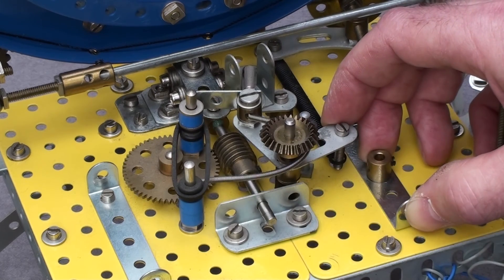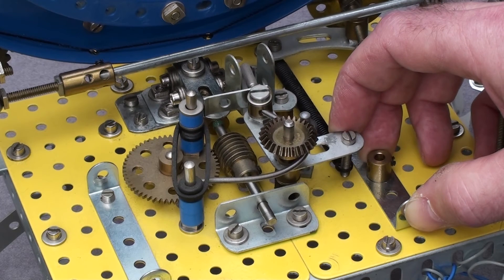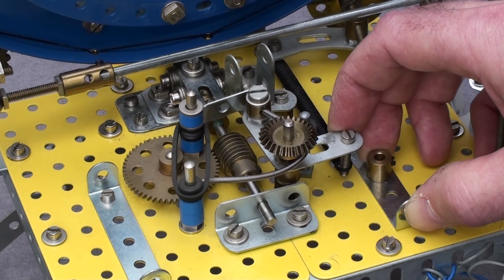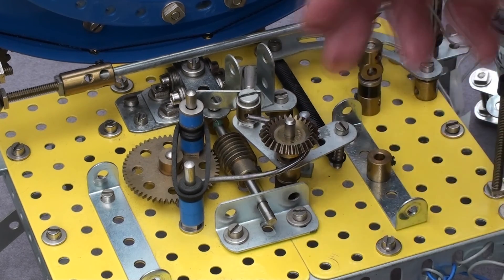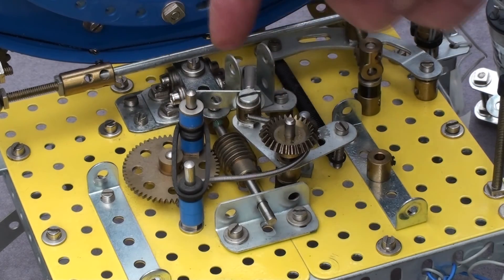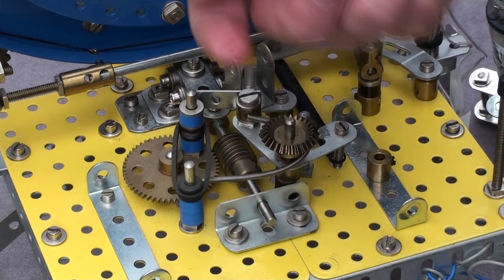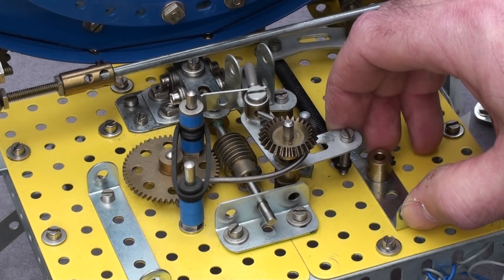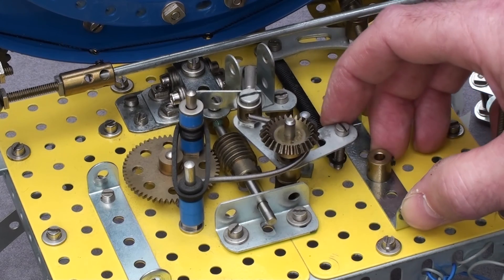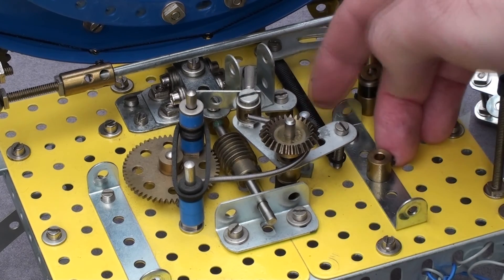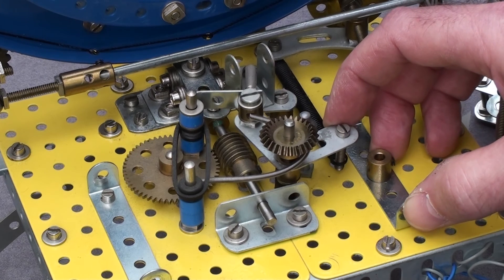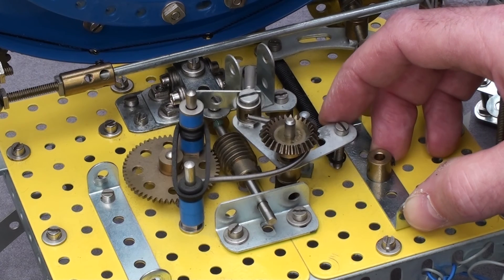Of course, this drive belt just presses the axle with the worm backwards, and of course the spring is the main force.